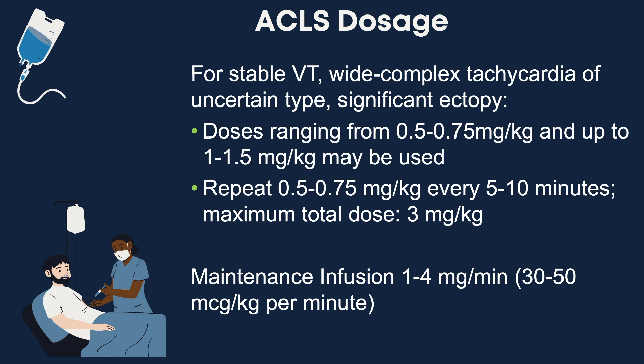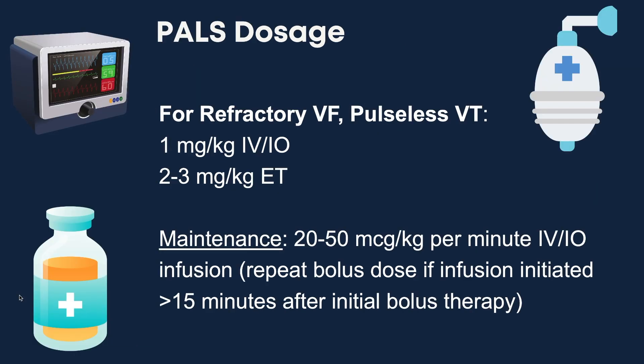The pediatric dosage for Lidocaine for refractory ventricular fibrillation or pulseless ventricular tachycardia is 1 mg per kg IV or IO. The ET dosage is 2 to 3 mg per kg. The maintenance infusion is 20 to 50 micrograms per kg per minute. The bolus dose should be repeated if the infusion was initiated more than 15 minutes after the initial bolus therapy.